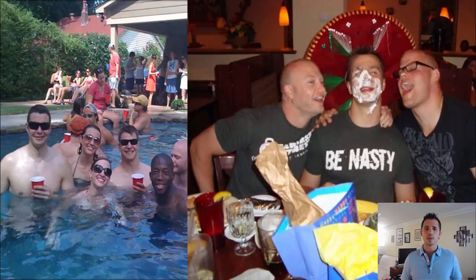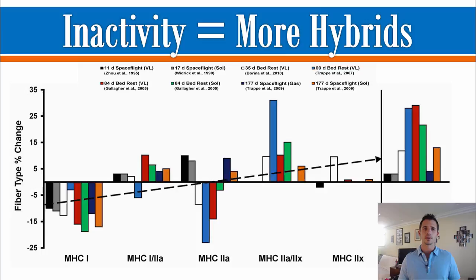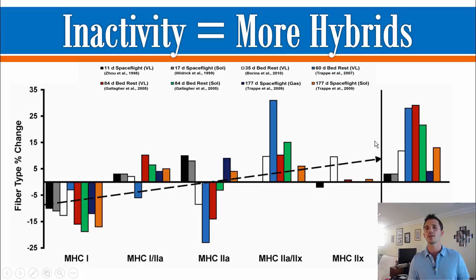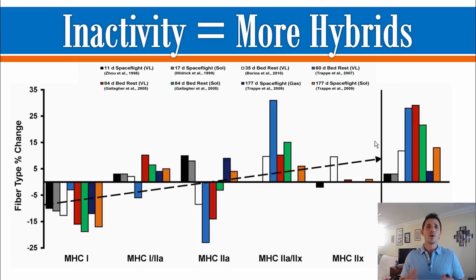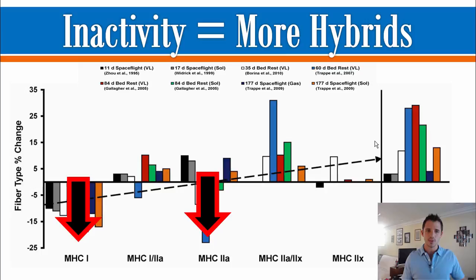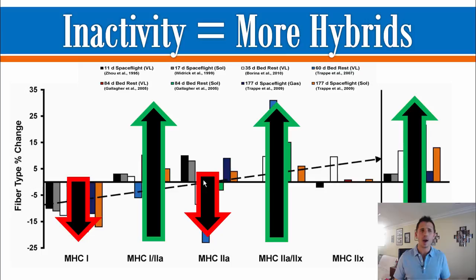My colleague Dr. Jimmy Bagley published a phenomenal literature review on this topic, and his graph highlights it quite clearly. Each one of the different colored bars is a different study — he's representing eight studies here. Over the last almost 25 to 30 years of research in this area, whenever we use the single fiber electrophoresis method — the only one that allows us to accurately identify these hybrids — we always see this pattern: when you're physically inactive, the pure fibers go down and the total hybrids go up.